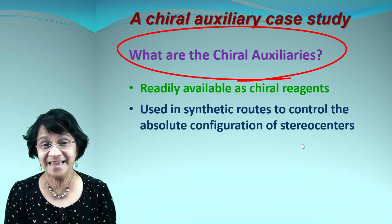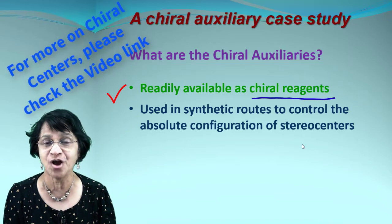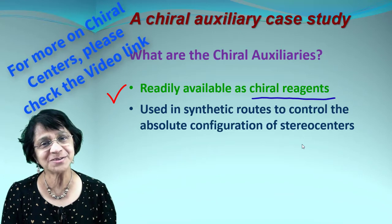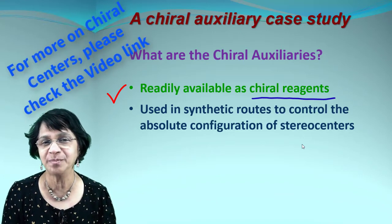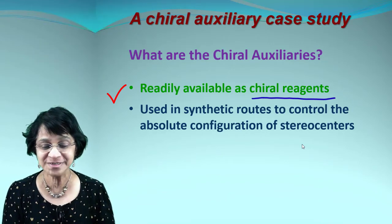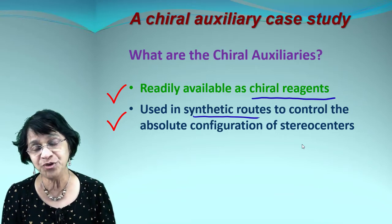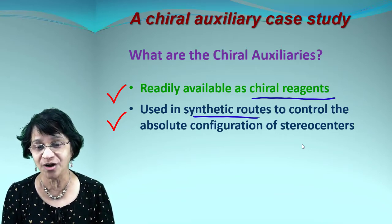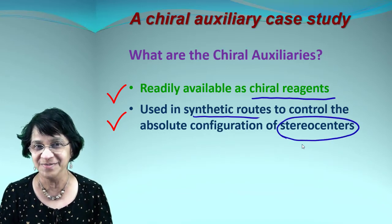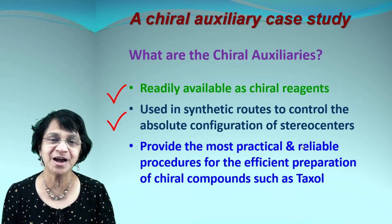These are chemicals — they are reagents, but specifically they are chiral reagents. We've talked about what chirality means and what a chiral reagent is. They should be readily available or easily made. We use them in synthesis and in synthetic routes when we have to control the exact configuration of the stereocenter in a chiral carbon.